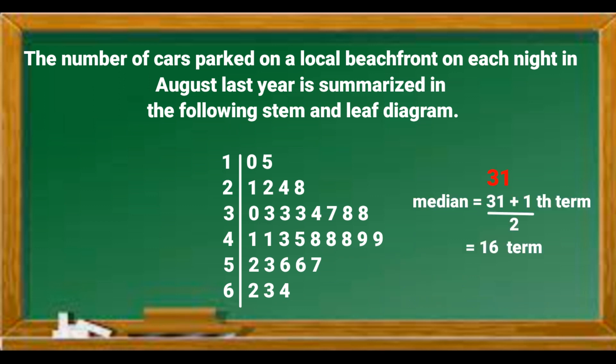To find which term is the median, which is the middle, we add 1 to 31 and divide by 2, which is the 16th term. So when we count 16, we will get 41 is the median.